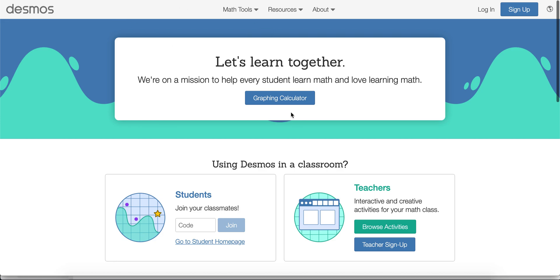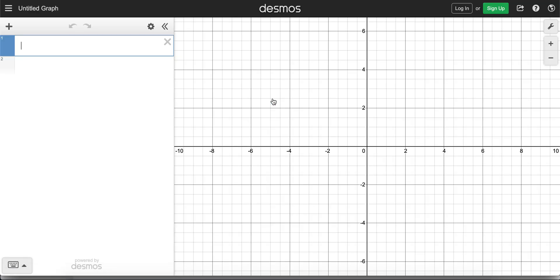So first you just got to go to desmos.com and then you'll get this screen right here which you can log in with an account that you have made previously or you can sign up with a new account. I just use my Google account and it's pretty quick to set that up. So you click on graphing calculator and you can go from there.